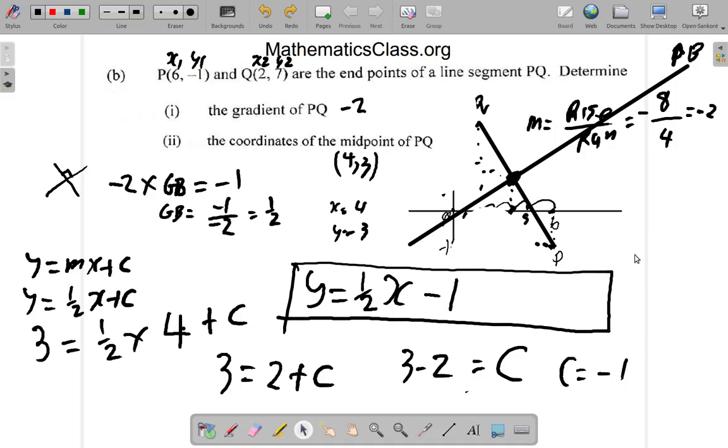Whichever form you write it in. Remember, you could also, if you wanted, you could also write it as when you multiply both sides by 2. Another way that you could have it is 2Y is equal to X plus 2. No problem. Same thing.